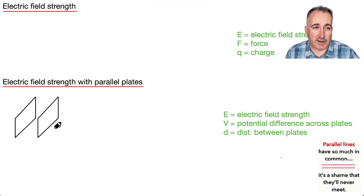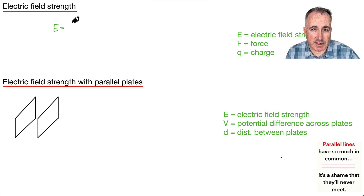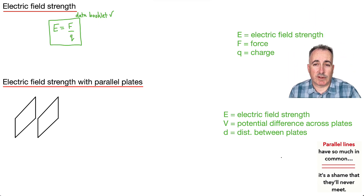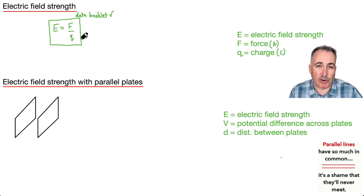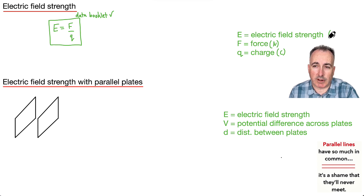Now let's actually quantify this electric field strength — this thing called E. We have an equation for it in your data booklet: E equals F over Q. Let's look at the units. Force is going to be in Newtons. Charge is in Coulombs. So electric field strength must be Newtons per Coulomb — Newtons Coulomb to the minus one.